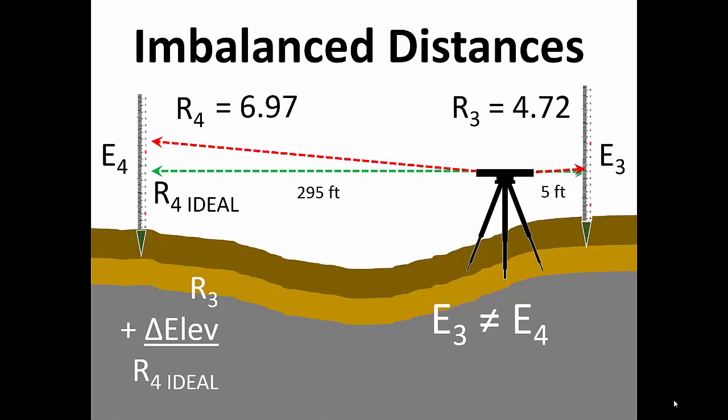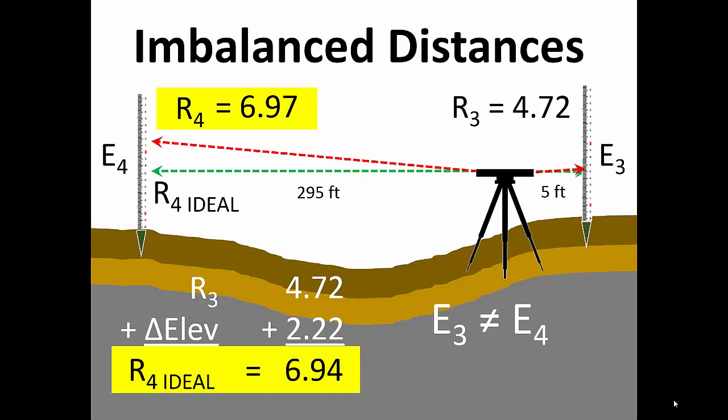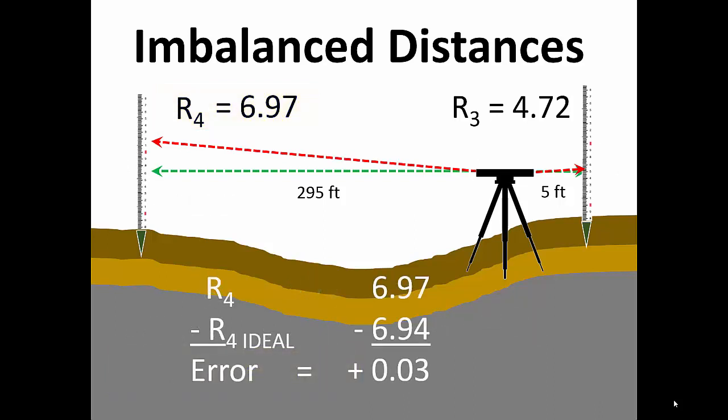However, if the instrument requires adjustment, then R4 ideal will not equal reading R4 as you see here. When we subtract R4 ideal from reading R4, the difference is the vertical error in the instrument line of sight.